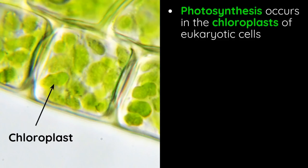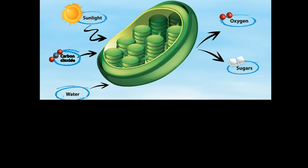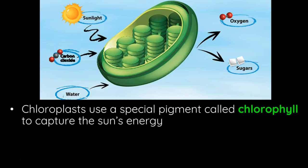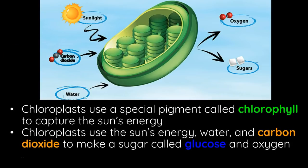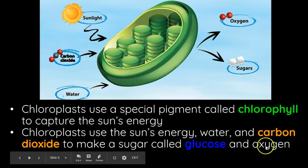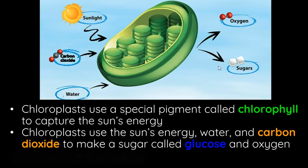Photosynthesis occurs in the chloroplast. These are happening in eukaryotic cells. Cyanobacteria actually use their plasma membrane. Here we have a little illustration of a chloroplast, and it uses a special pigment called chlorophyll, which is found in those little thylakoid membranes. Chloroplasts use sun energy, water, and carbon dioxide to make the sugar glucose. And then as a byproduct, oxygen is made.